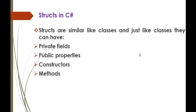Structs in C-Sharp. Structures are similar like classes, and just like classes they can have private fields, public properties, constructors and methods. Right now we will jump into Visual Studio and explore each of them.